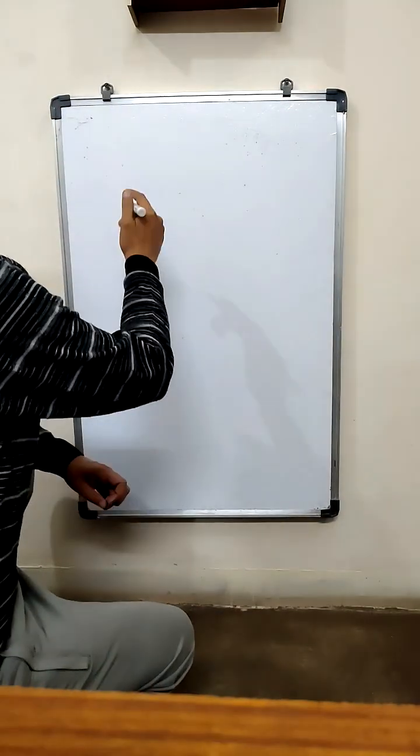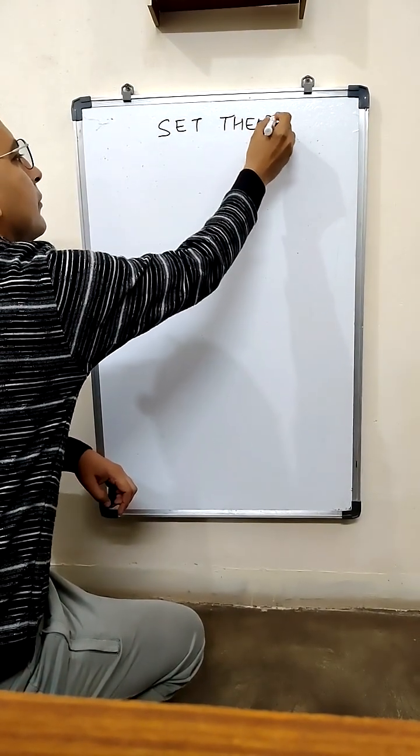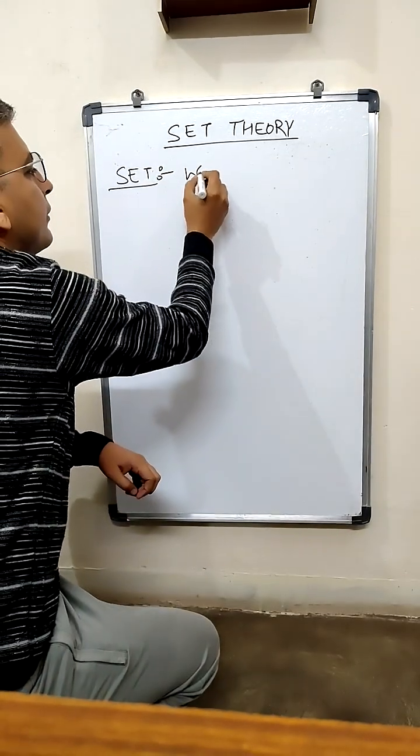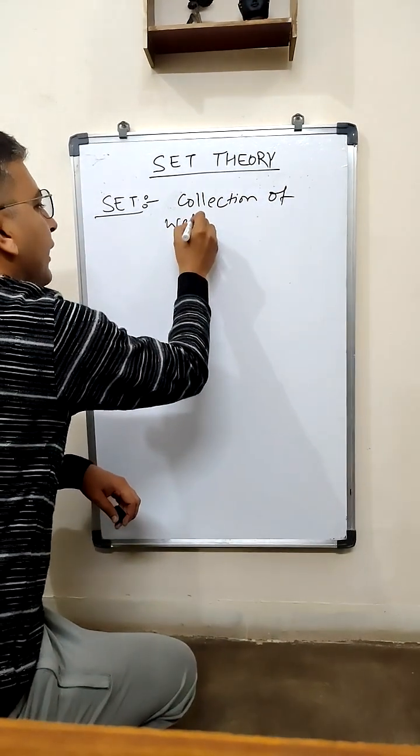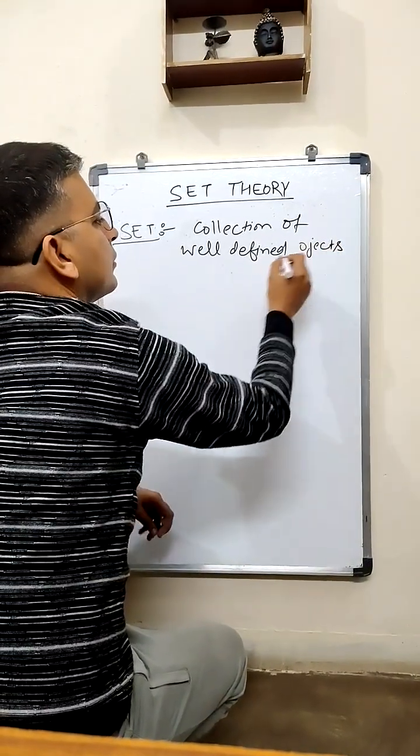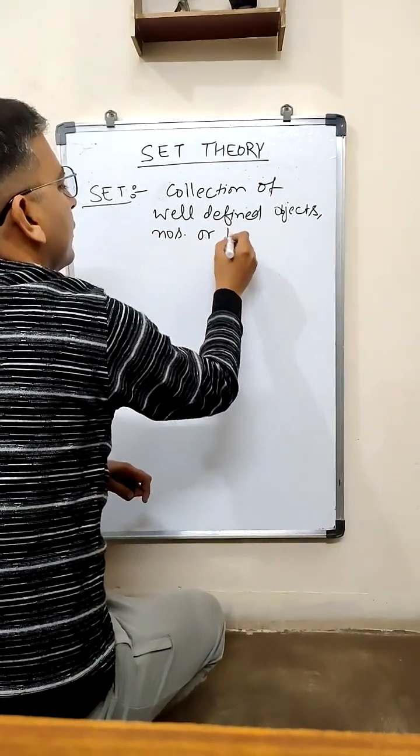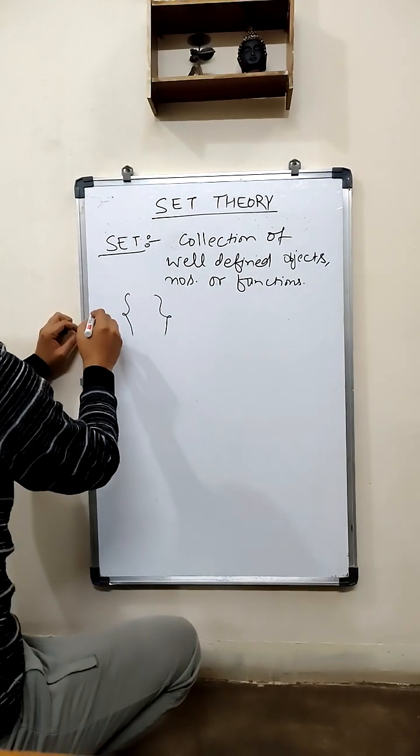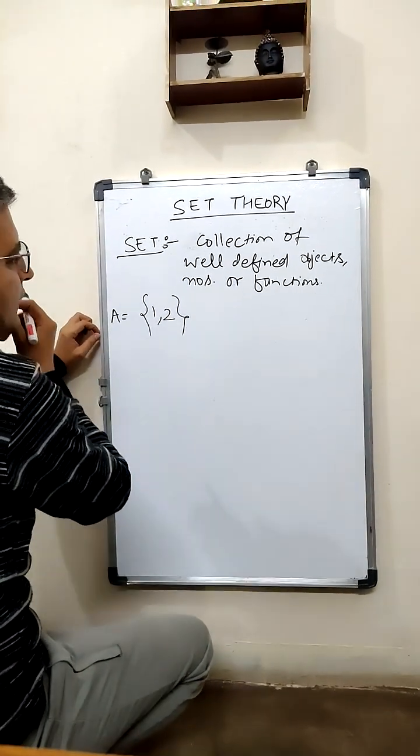Good evening dear students, today we will discuss about set theory. So what is a set? A set is a collection of well-defined objects, numbers, or functions. A set is denoted by the curly bracket and capital letters. For example, A is equal to {1, 2}. It is a set. Next is the type of sets.